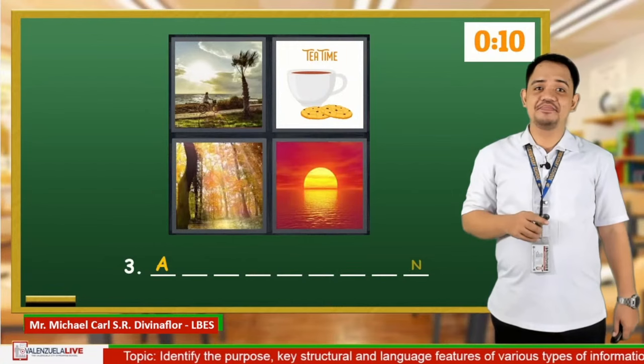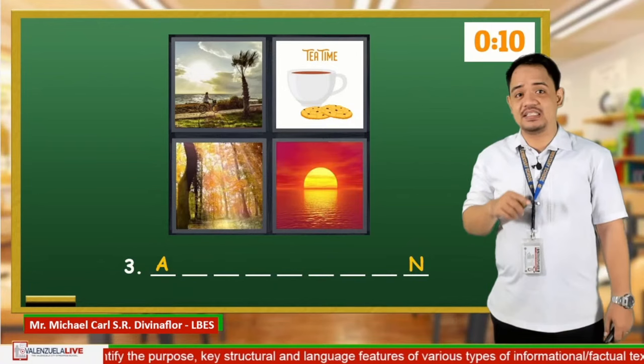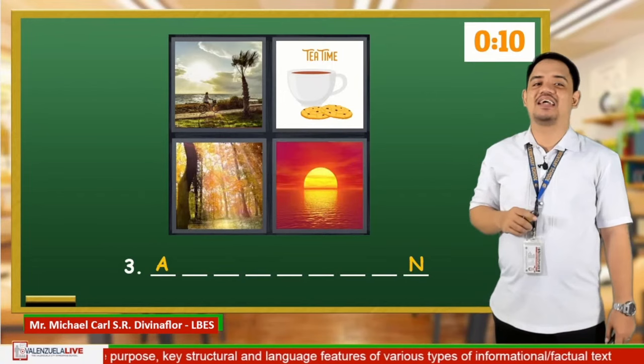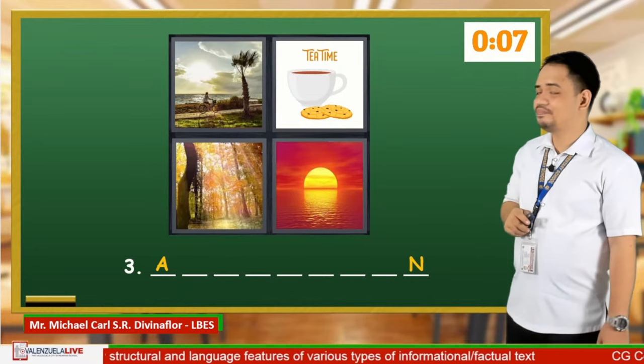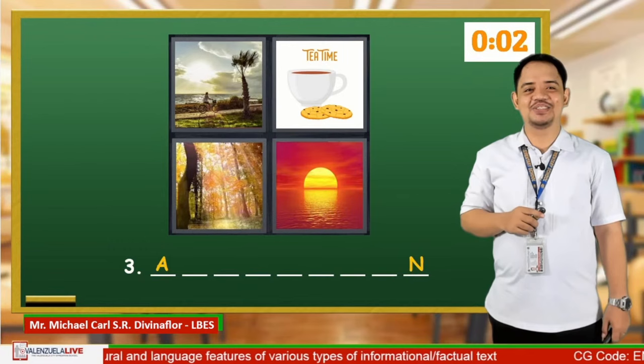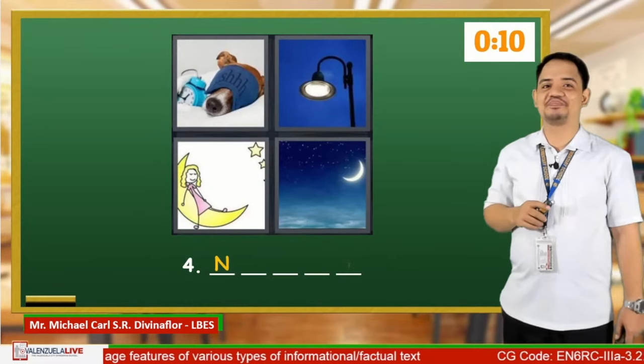Let's move on and have the third one. We have people biking with the sun low in the sky, snacks such as tea and biscuits, shade from the trees, and the sun setting on the sea. What do you think do these pictures refer to? And the answer is Afternoon! Amazing! I hope that you got it correctly.